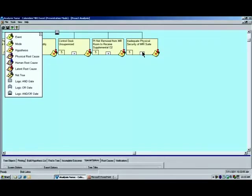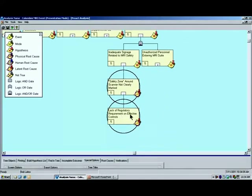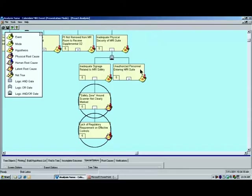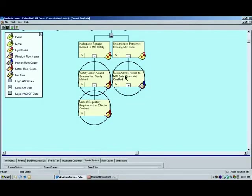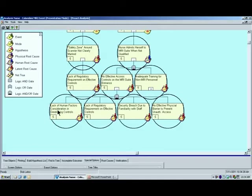Inadequate physical security of the MRI suite. How can that be? Inadequate signage related to MRI safety. How can that be? Safety zone around the scanner was not clearly marked. Why? Lack of regulatory requirement on effective controls. There was also unauthorized personnel entering the MRI suite. How can that happen? The nurse admits herself to the MRI suite when she was not qualified. Why? Because there was no effective access controls on the MRI suite entrance. Why? There's a lack of human factors consideration in developing such controls. Lack of regulatory requirement on such effective controls. A security breach due to familiarity with staff. And no effective physical barrier to prevent unauthorized access.